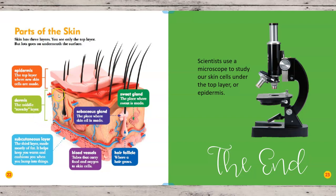The green bracket is the dermis — the middle or stretchy layer. Inside the middle layer there's a lot of important stuff: sebaceous glands where your skin oil is made, the hair follicle where your little hairs grow out, sweat glands where sweat is made to cool you off, and blood vessels — little tubes that carry food and oxygen to your skin cells. At the very bottom is the subcutaneous layer, the third layer, mostly made of fat to keep you warm and to cushion you when you fall.